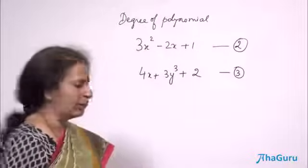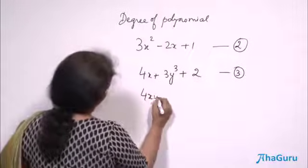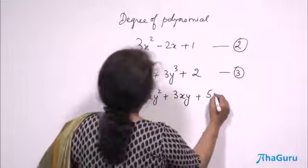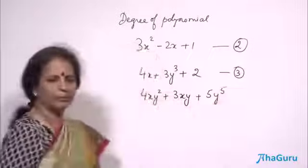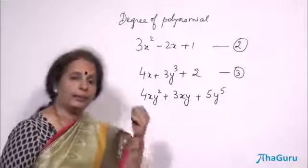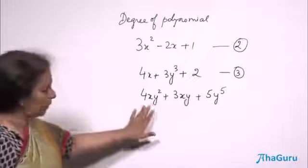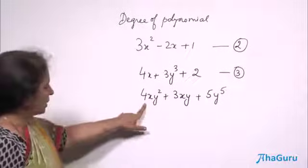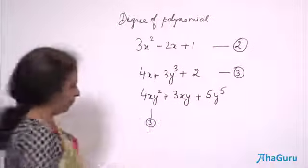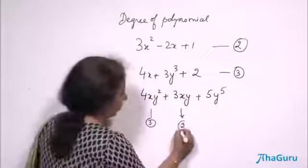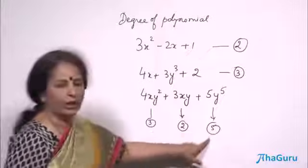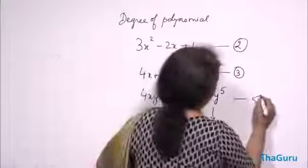Let us have a polynomial with 2 variables: 4xy squared plus 3xy plus 5y to the power phi. What is the degree of this polynomial? We look at each term and add the powers of the individual variables. For the first term 4xy squared: x has power 1 and y has power 2, so 1 plus 2 equals 3. For the second term 3xy: x is 1 and y is 1, so the degree is 2. For the third term, there is no x, and y has the power phi, so the degree is phi. Among 3, 2, and phi — phi is the largest, so the degree of this polynomial is phi.